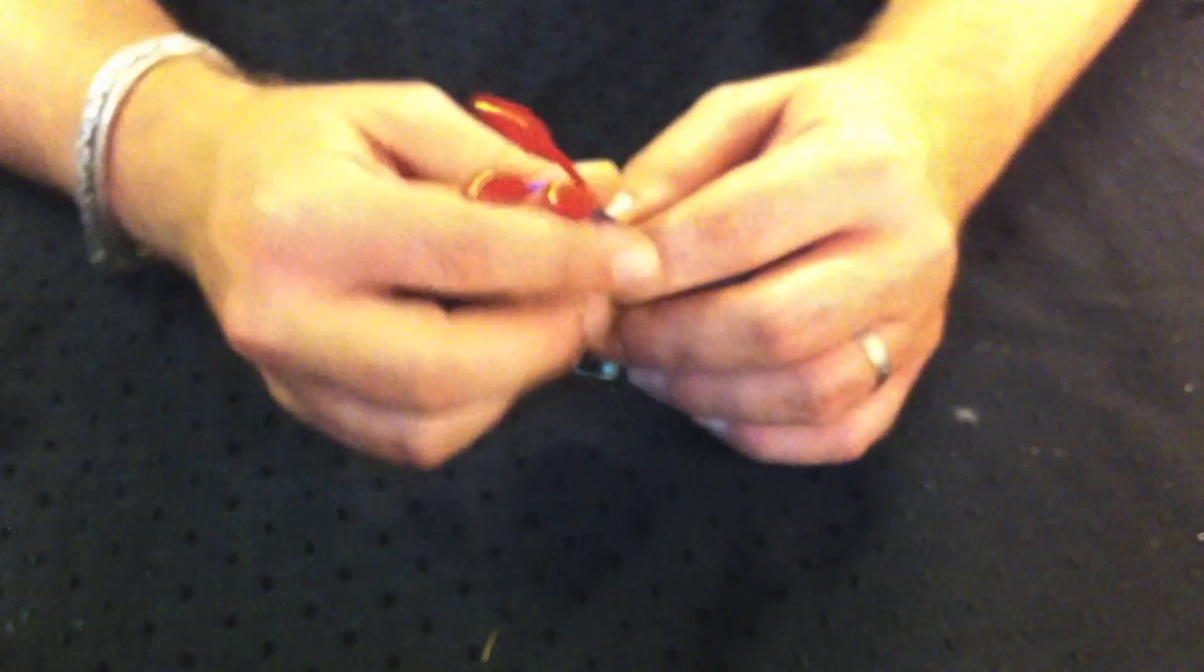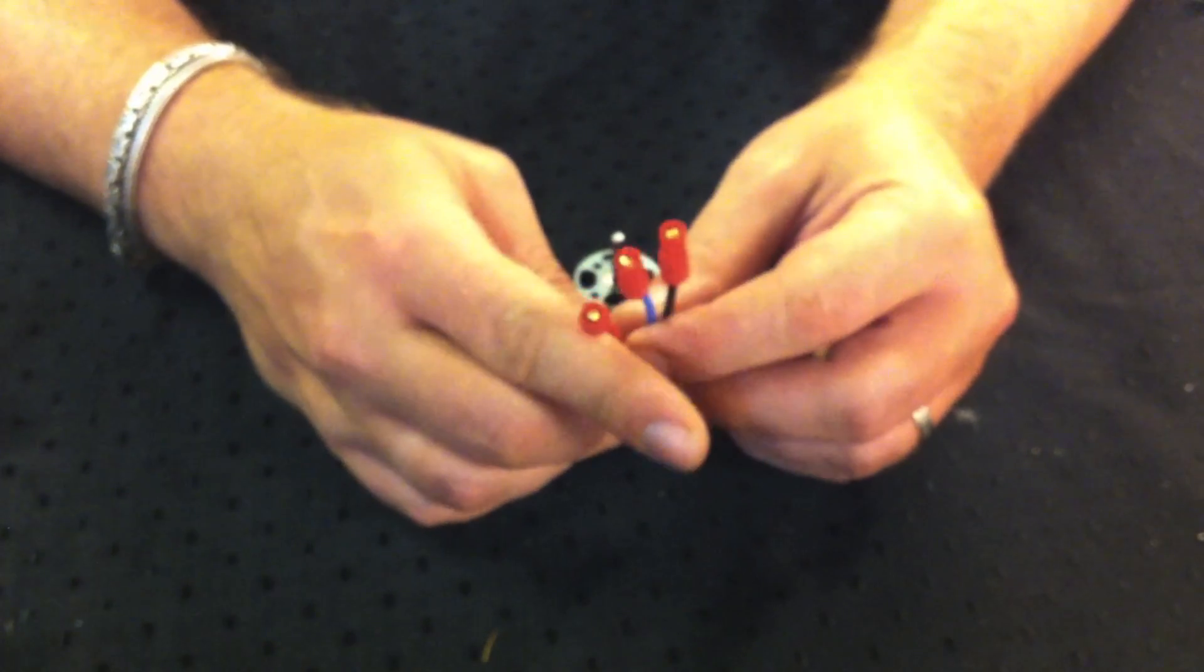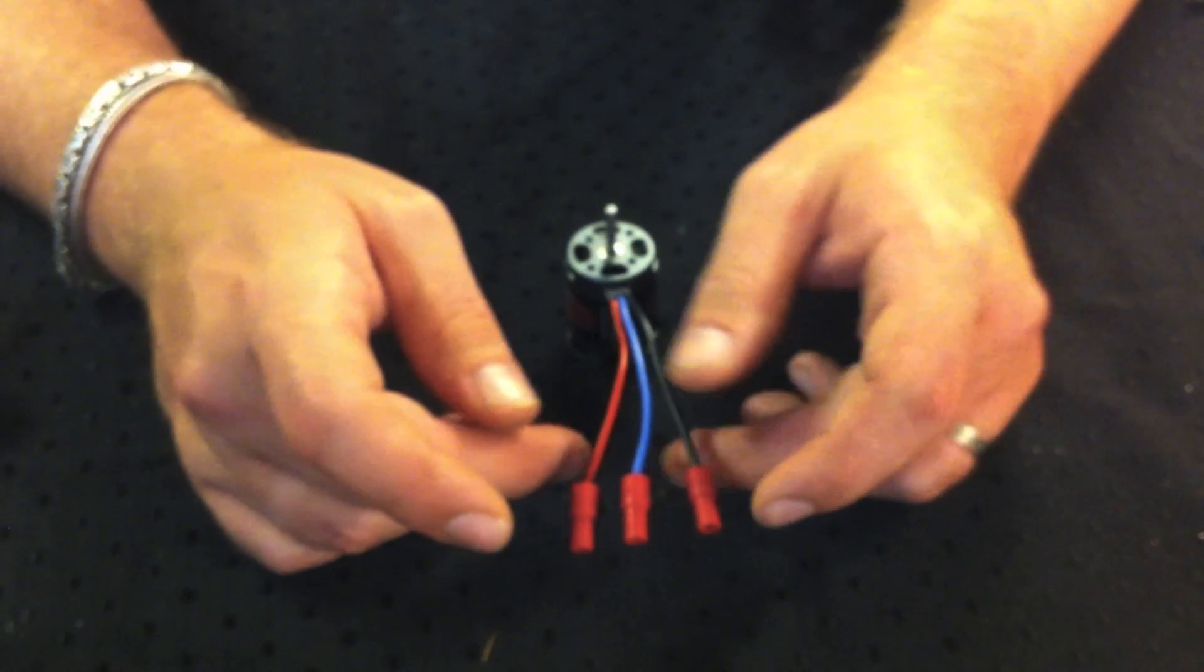This is your engine. Three wires. Funny enough, it's the same number of wires as on your ESC. In this case these are color coded. It does not matter.